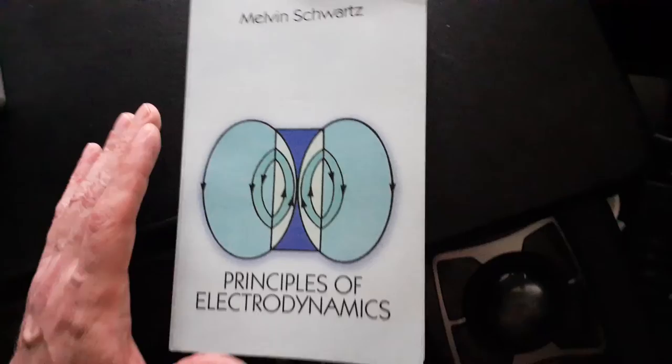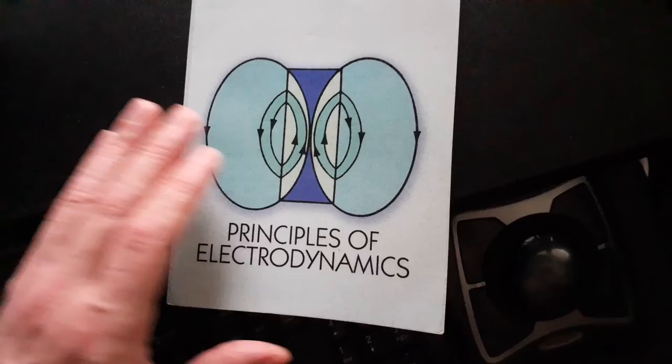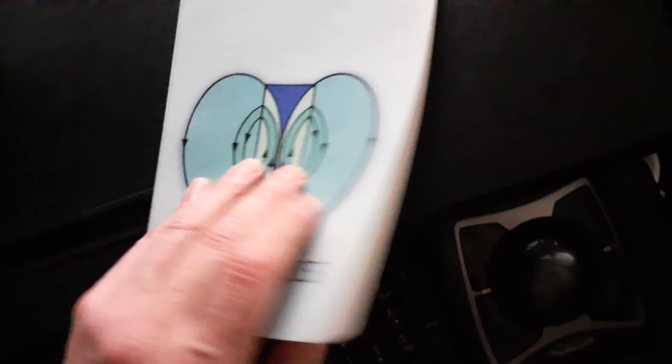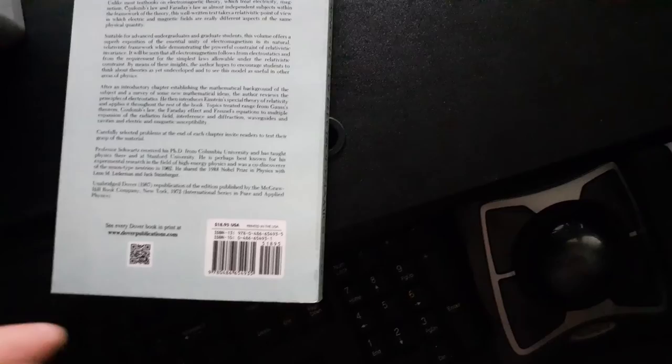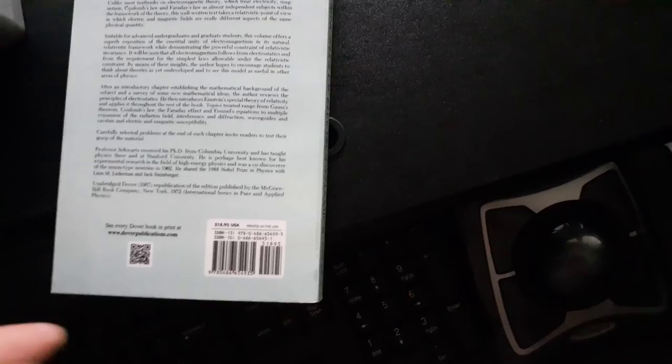But Schwartz will give you some insight. I think that Jackson, because it has just so much stuff in it, won't. So Schwartz is poignant. He has a point of view, whereas Jackson is a collection of just about everything you will need to know for anything you possibly could do. So I really suggest this. It's a Dover book. It's cheap. I'll put a link in the description box for this video, I guess. And hopefully you can take a peek of that and you'd enjoy it. All right. Bye now.